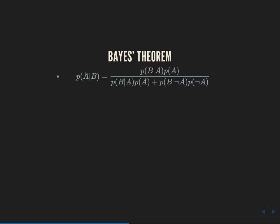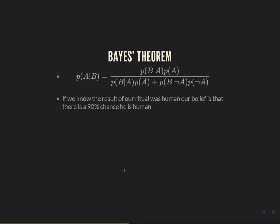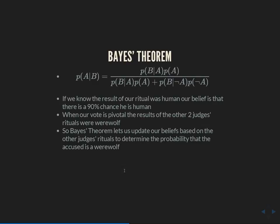What we want is: what's the probability he's a werewolf, given that we got these votes from the other judges? What we're given in the problem is: what's the probability we'd get certain badger milk ritual results, given that he's a werewolf? If we know our own ritual result says 'human,' our existing belief is a 90% chance he's human. When our vote is pivotal, we know the other two judges' rituals said werewolf. We should always assume we're pivotal when voting, because your vote only matters when it affects outcomes.